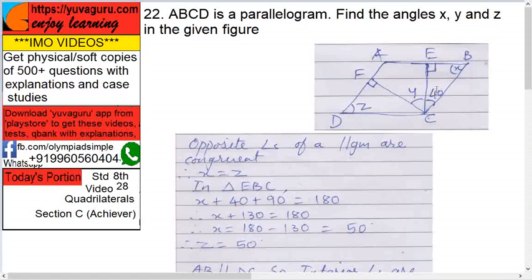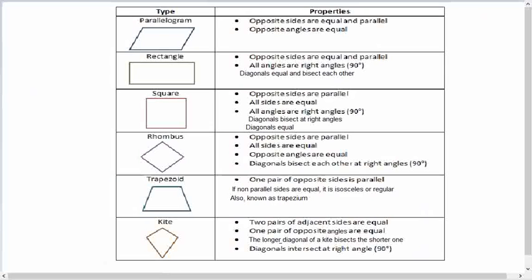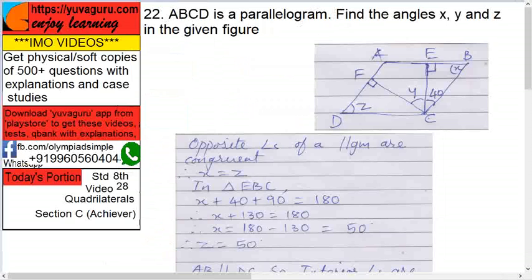Firstly, an important part is opposite angles of a parallelogram are always congruent. See, two main conditions of parallelogram: opposite sides are equal and parallel, and opposite angles are congruent. And the third important condition is diagonals bisect each other in a parallelogram. So as opposite angles are equal, X equals to Z. These two are opposite angles.